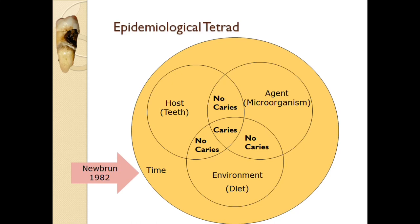There is an advanced explanation of this epidemiology called the tetrad by Newbrunn in 1982. He added a time factor to the triad, making it a tetrad, because the epidemiological triad cannot fully explain the dental caries mechanism. Time is important because sucrose must be present in the oral cavity for a particular period of time for acid production to occur; otherwise caries will not happen. So Newbrunn added this time factor in 1982, making it a tetrad instead of a triad.